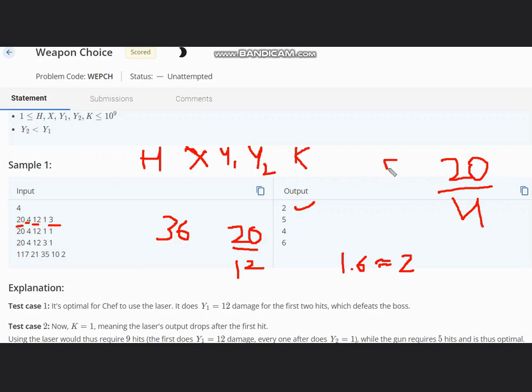Now if we take minimum of 2 and 5, it will be 2. Hence our answer is 2 in this case.